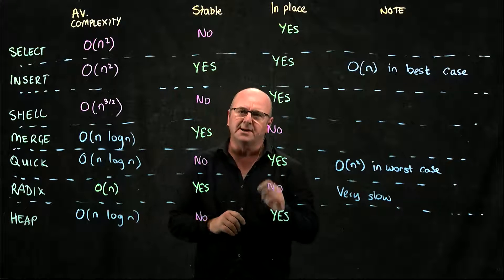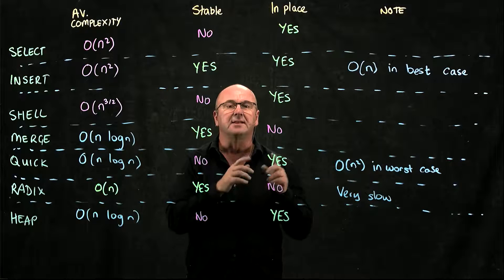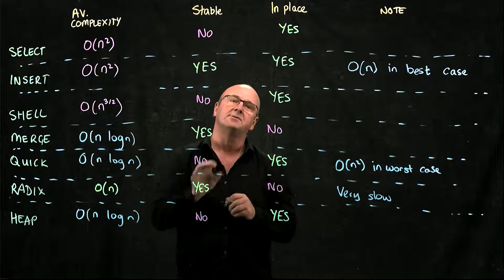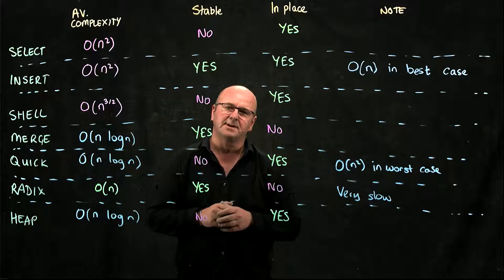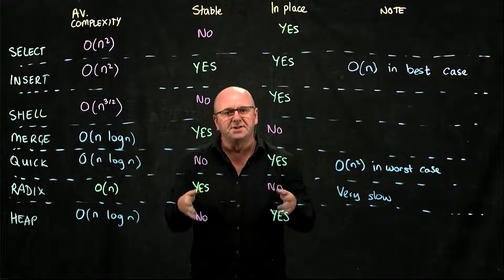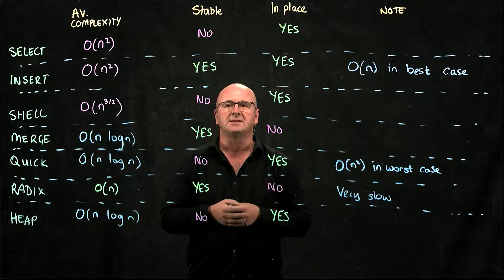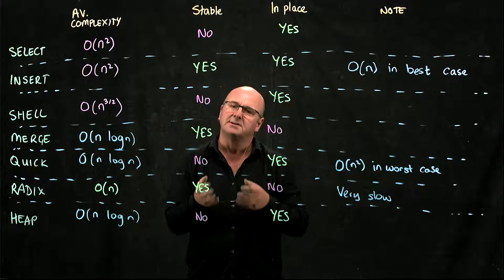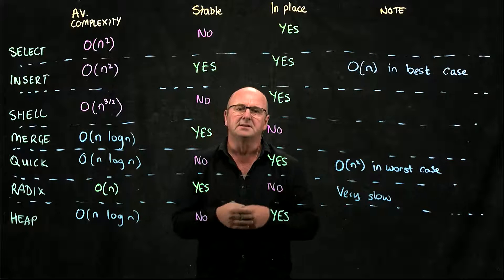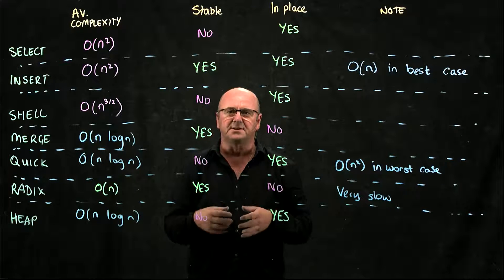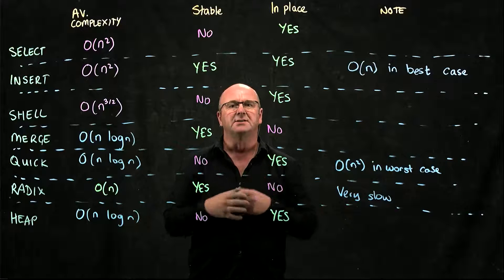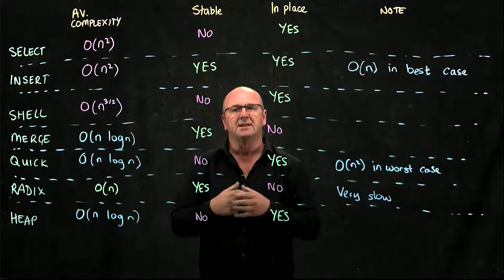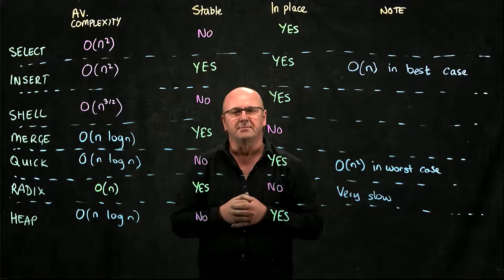Remember that with quick sort, if you always choose either the largest or the smallest thing as your pivot, you'll end up with O(n²) complexity. For general sorting, it's unlikely that will be the case unless you're unlucky. So quick sort, because it's in-place and a robust algorithm, is really the sorting algorithm of choice for most applications.